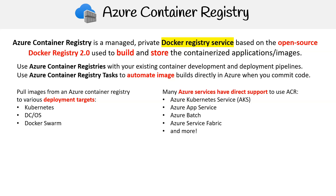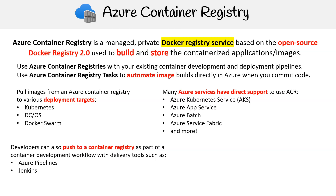Many Azure services, including Azure Kubernetes Service, Azure App Service, Azure Batch, and Azure Service Fabric, offer direct support to interface with ACR. This ensures a cohesive workflow for deploying applications. Developers can also push container images to a container registry as part of a container development workflow with delivery tools such as Azure Pipelines and Jenkins.